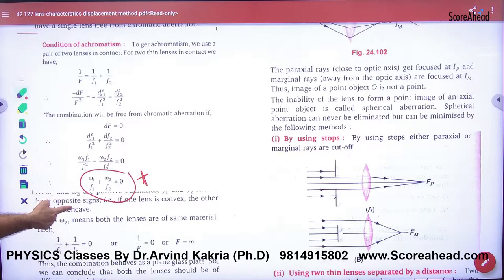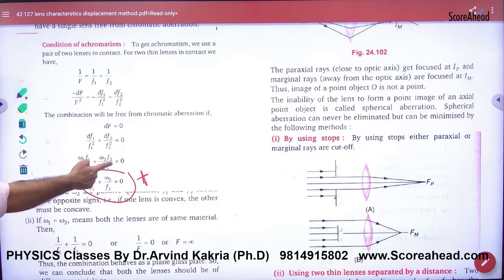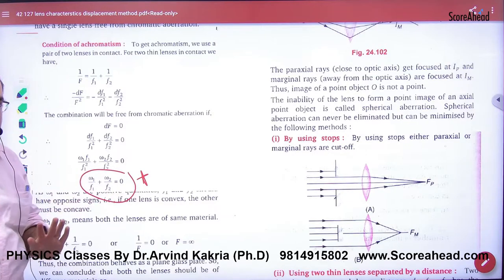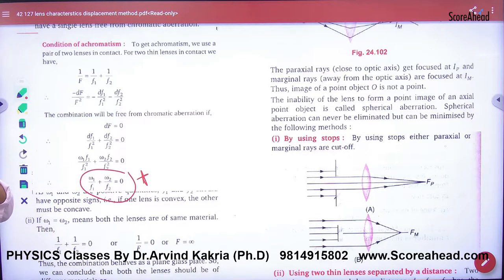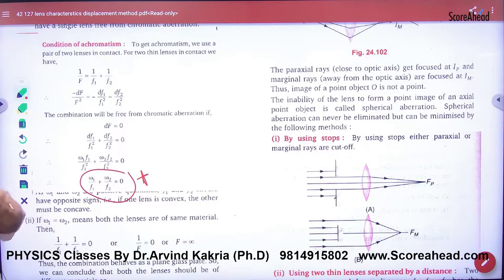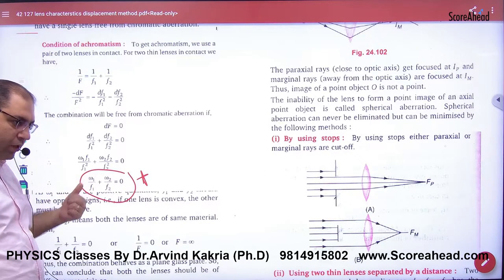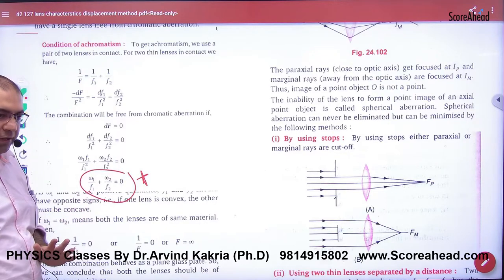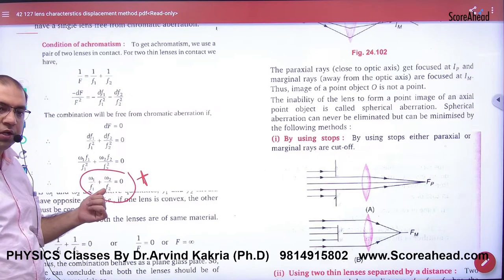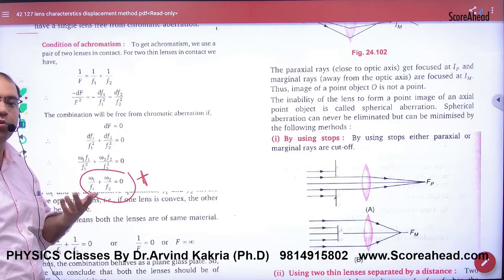The condition is ω₁/f₁ + ω₂/f₂ = 0. In this condition, achromatism occurs. Two lenses: one with dispersive power ω₁ and focal length f₁, and the other with dispersive power ω₂ and focal length f₂.